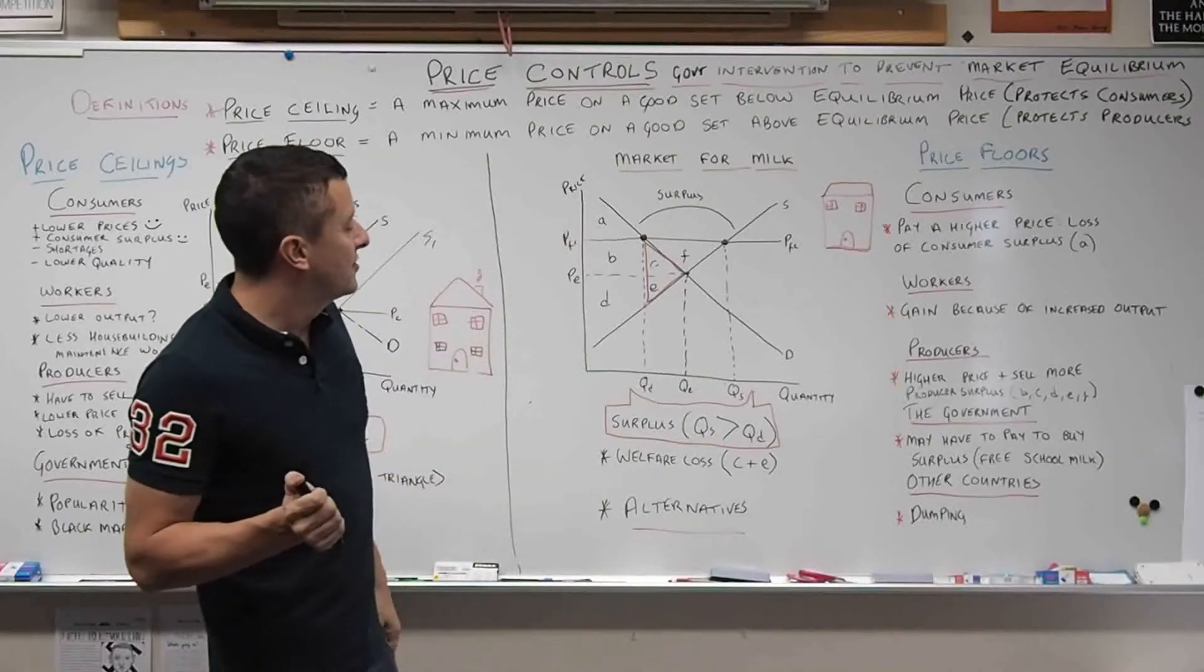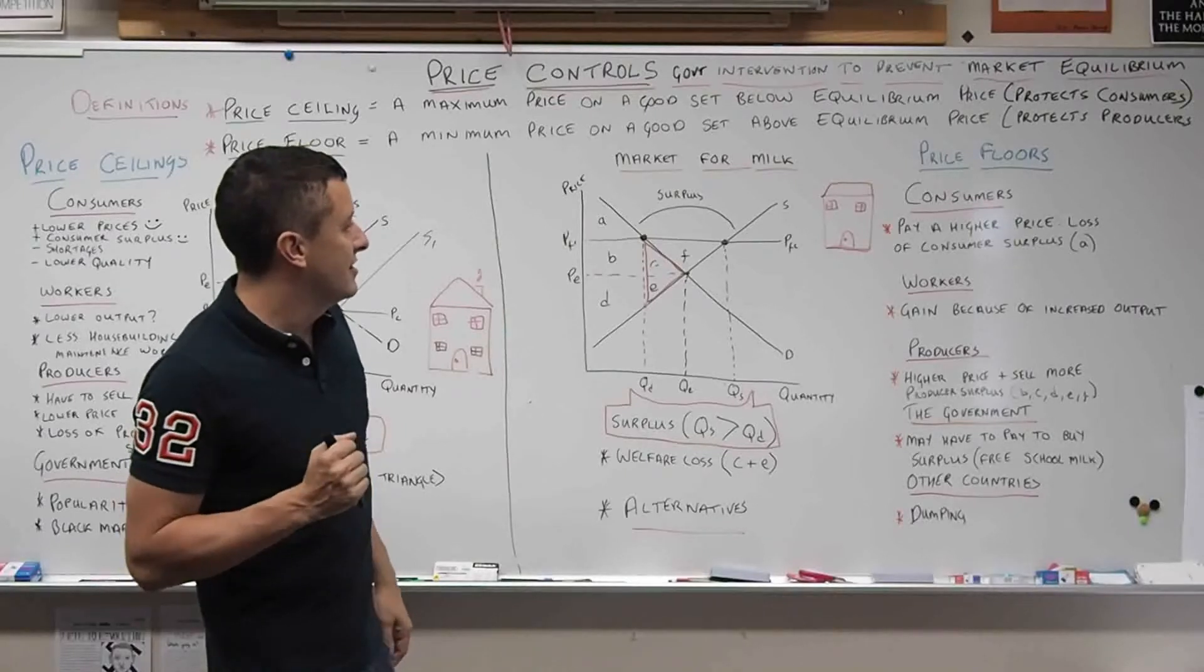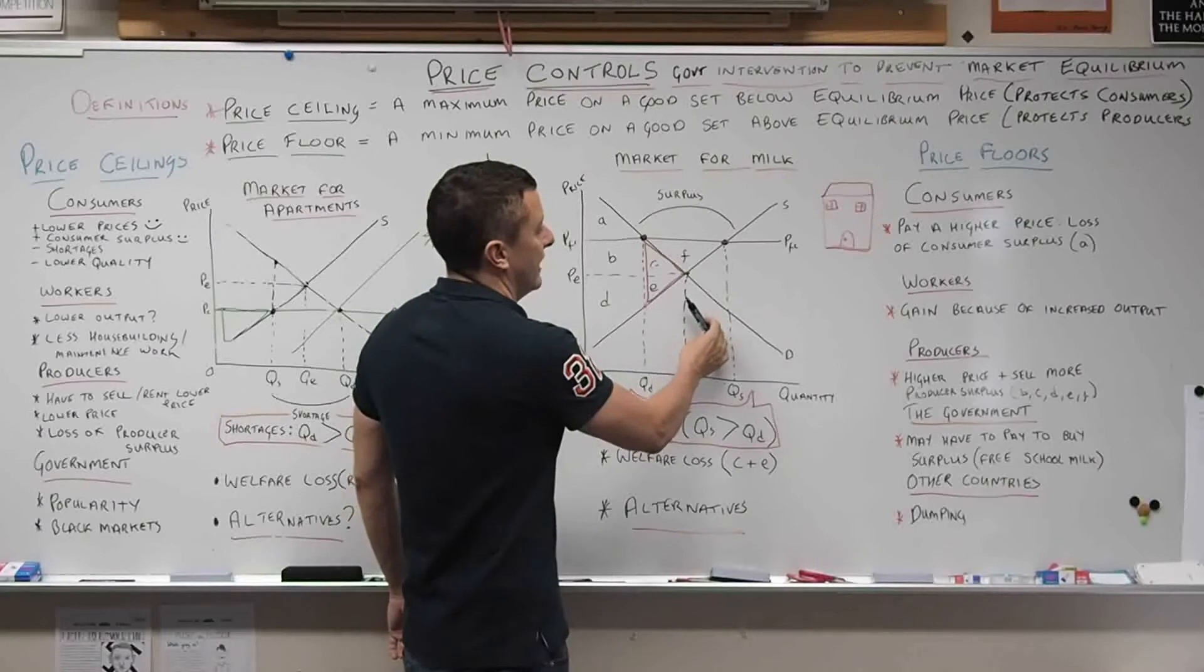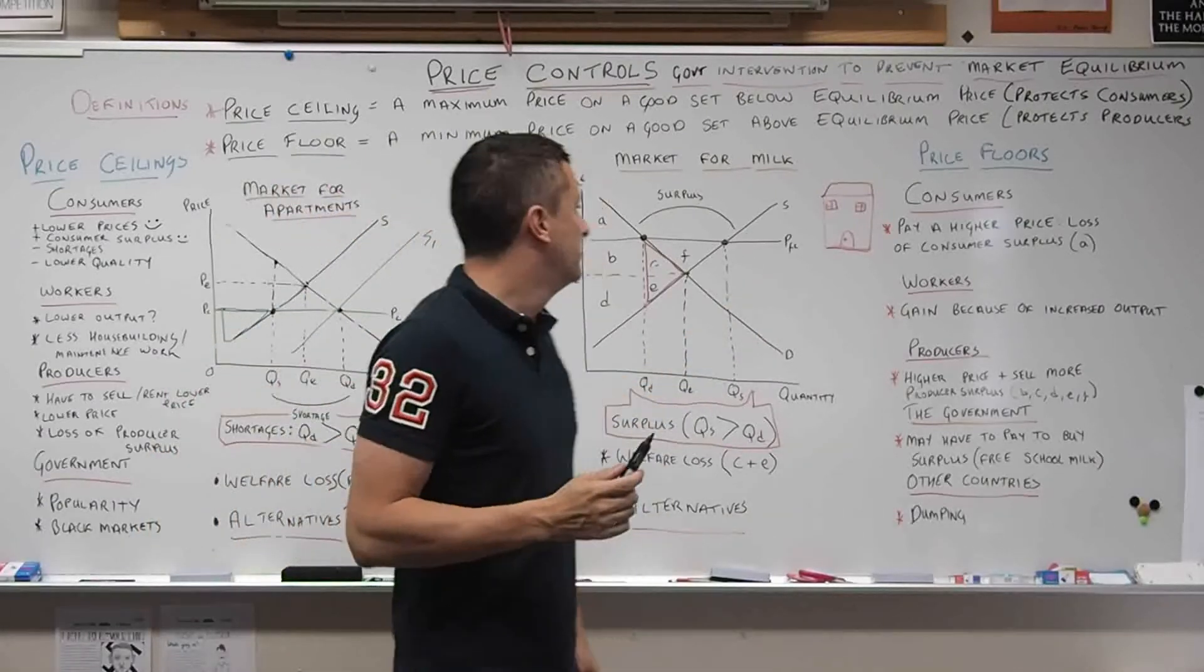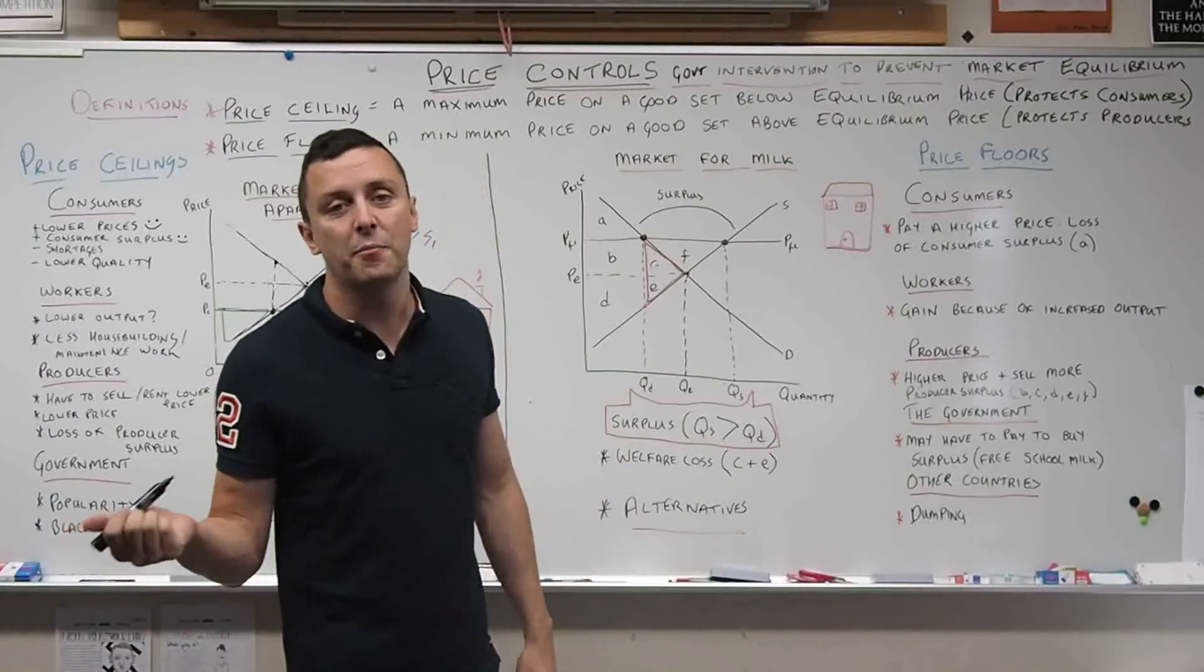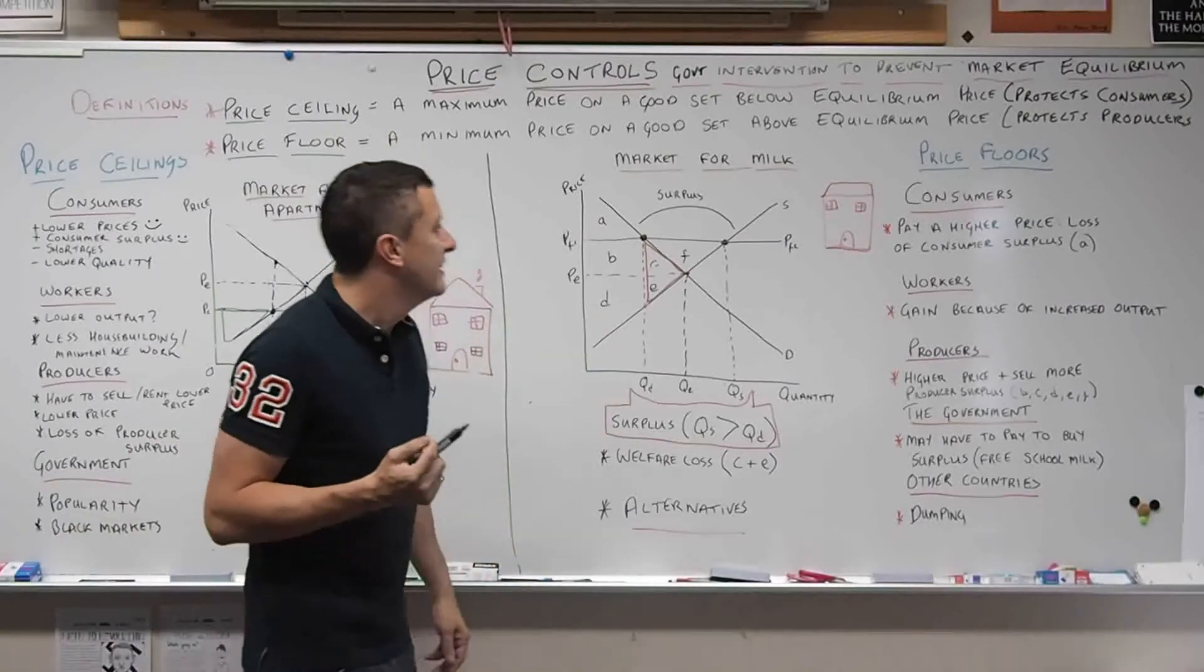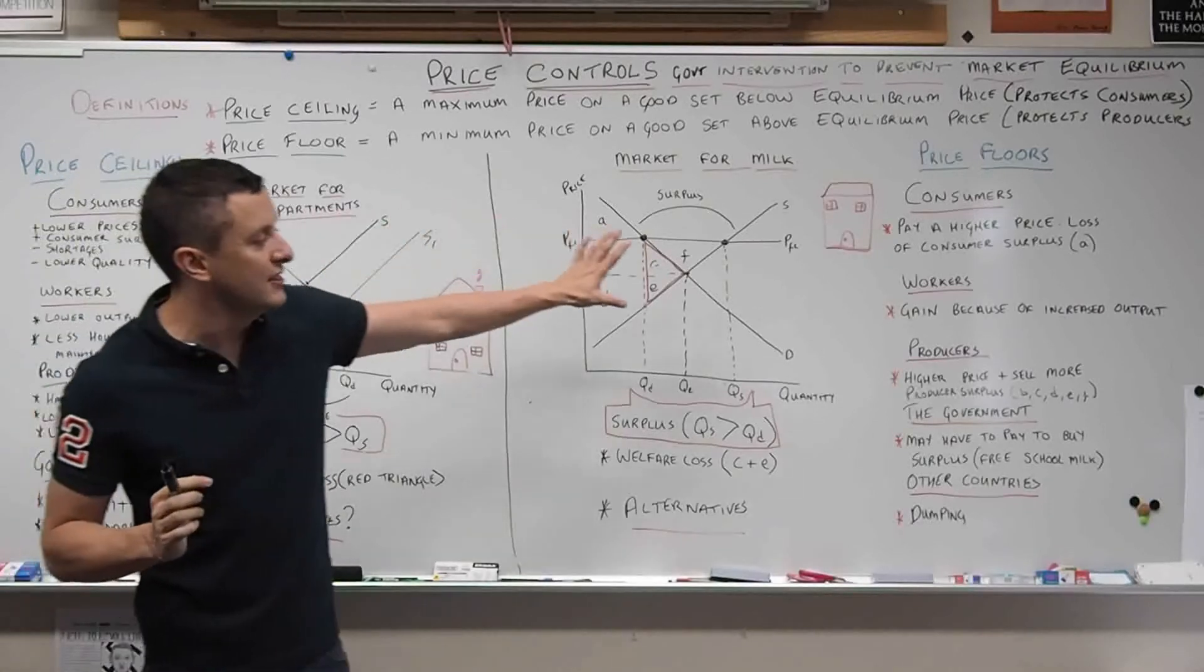So what could be the alternative to this? The alternative could be to just try to increase the demand for that product. That could be done through national advertising campaigns and a lot of other different methods. So that's price floors and price ceilings.